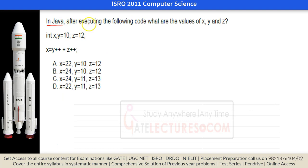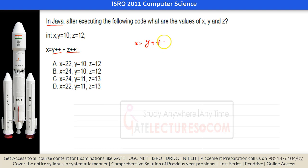The next question is about Java: after executing the following code, what are the values of X, Y, and Z? X is not initialized, Y is initialized with 10, Z is initialized with 12. X equals Y++ plus Z++. These are post-increments, which means first the values are used in the expression, then they are incremented.